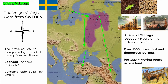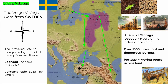Moving on to the Volga Vikings — something really important for your exam: the Volga Vikings came from Sweden, not Denmark, not Norway — Sweden. They were named the Volga Vikings because they travelled down the Volga River. They travelled east first to Staria Ladoga, where they traded. It was there that they heard of the riches of the Byzantine Empire and the Arab world — Baghdad. Be careful not to get those mixed up.